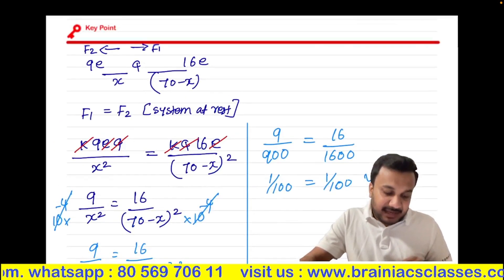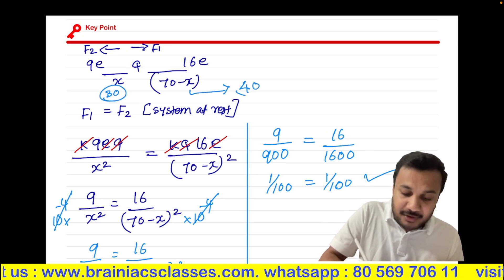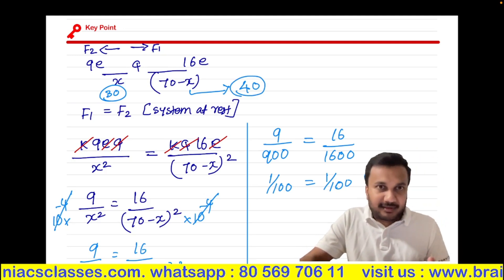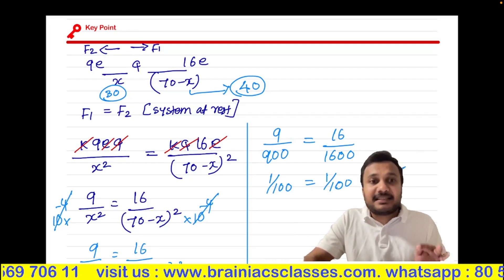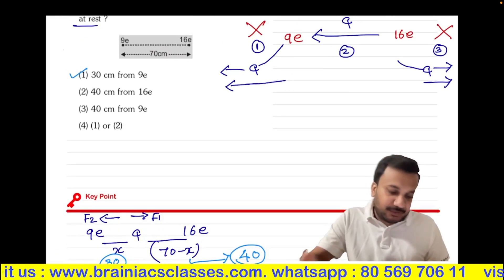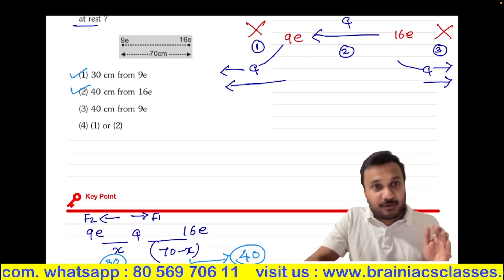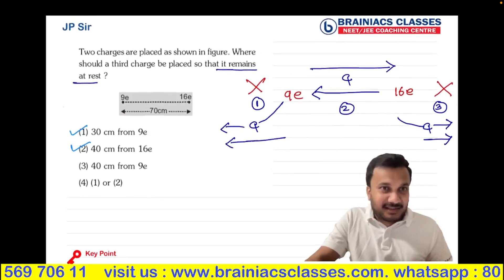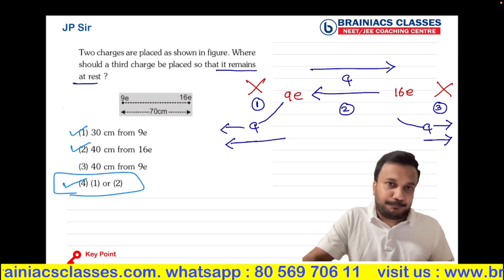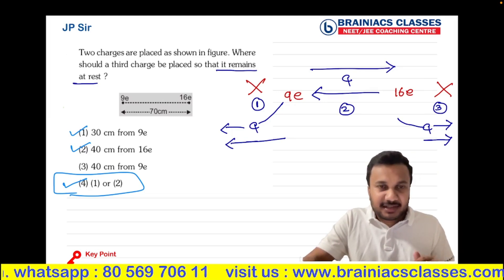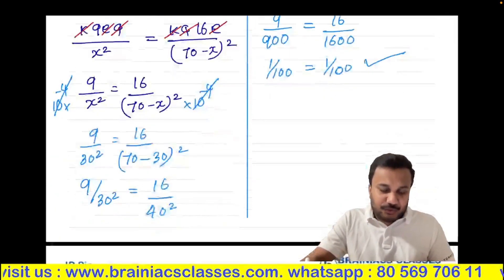So X equals 30 cm, and 70 minus X equals 40 cm. The 3rd charge should be placed 30 cm from 9E or equivalently 40 cm from 16E. Options 1 and 2 are both correct individually, so option number 4 — which combines both — is the right answer. This type of question is asked many times with different values and different signs of charges.